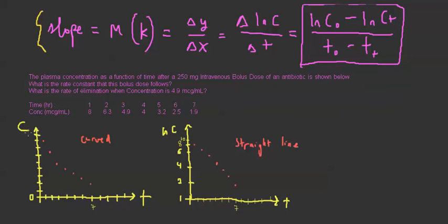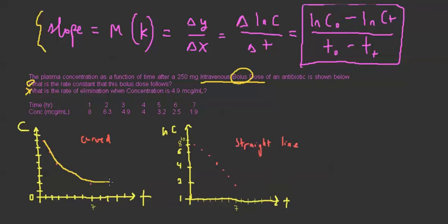Let's do a practice problem. The plasma concentration as a function of time after a 250 mg intravenous bolus dose of an antibiotic is shown. What is the rate constant that this bolus dose follows? I plotted the data with C versus time, and we notice it's a curve. But if we plot it on a log scale, it becomes a straight line.